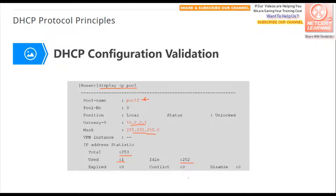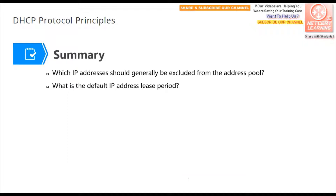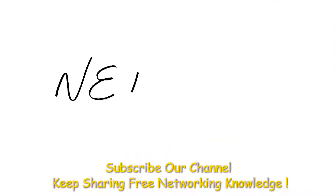This is the DHCP configuration. At the end, we have two review questions. First: which IP addresses should generally be excluded from the address pool? Usually the gateway is excluded by default, and any IP addresses that are manually configured to devices in the network should also be excluded. Second: what is the default IP address lease period? The default IP address lease time is one day — 24 hours.